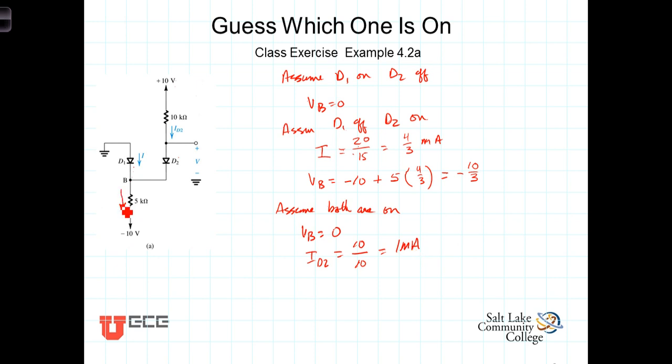What will the current be here? Well, let's call that I sub 5. I sub 5 would equal zero minus a minus 10 divided by 5 kiloohms. That would then be 10 divided by 5. That would be 2 milliamps.